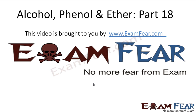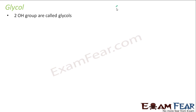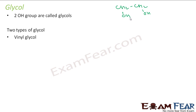Hello friends, this video on alcohol, phenol and ether part 18 is brought to you by examphia.com. Now let's understand glycols. Glycols are compounds that have two OH groups. For example, CH2-CH2 with an OH group added to both carbons — these are all glycols. This is ethylene glycol.